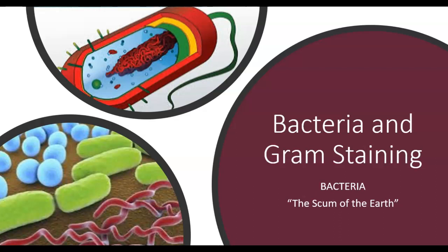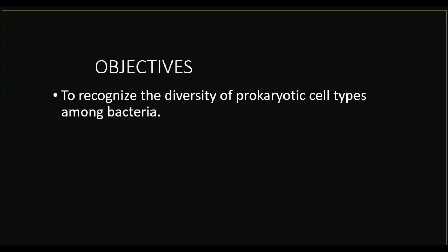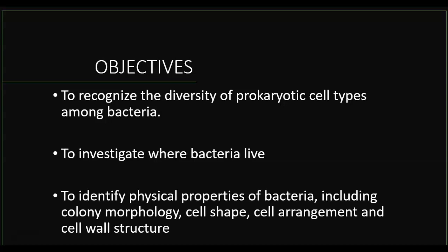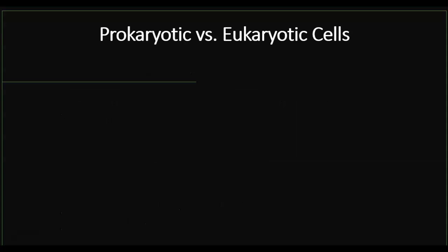Hi everyone. In this lecture video we're going to go over bacteria and gram staining. First let's talk about the objectives for this lecture. You should be able to identify the diversity of prokaryotic cell types among bacteria. You will learn to investigate where bacteria live, and you will learn to identify physical properties of bacteria, including colony morphology, cell shape, the arrangement of bacteria, and their cell wall structure.